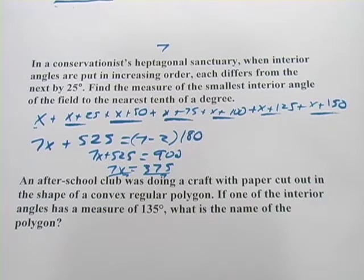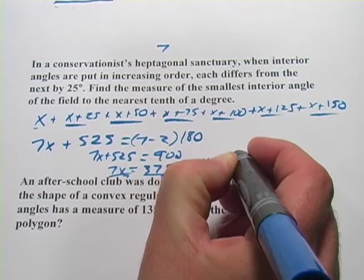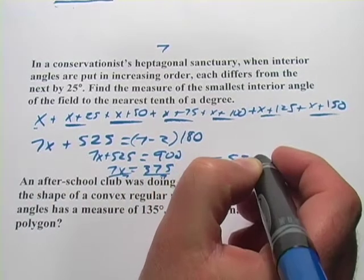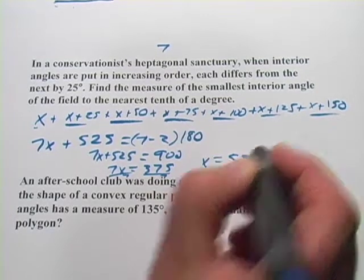And then finally we divide by 7, and we get x equals 53, and they told us the nearest tenth, so 53.6 degrees.